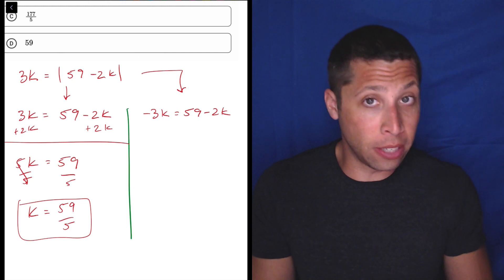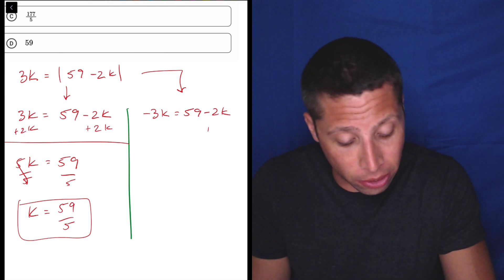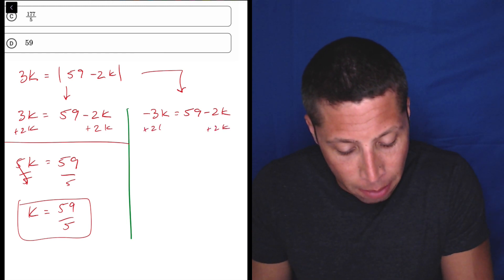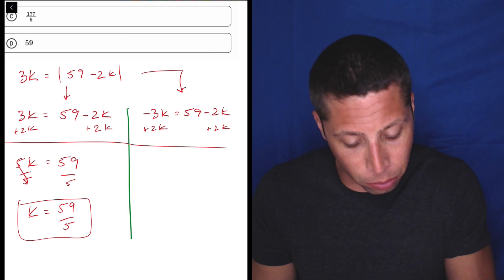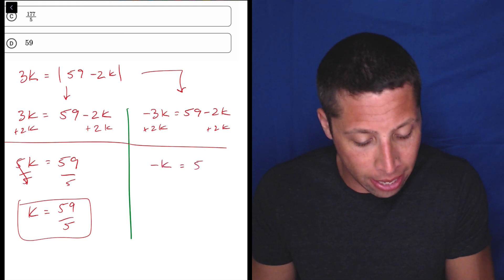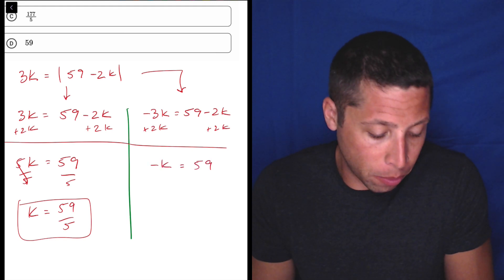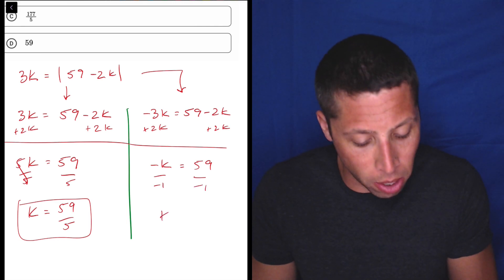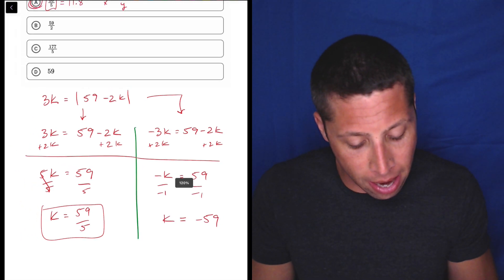How would we deal with this other equation? Well, we would just still solve it. So we would add 2K to both sides. But notice it's going to start to diverge from the other one here. So this is negative K is equal to 59. And then we would divide or multiply by negative 1. So in this case, K would be negative 59.